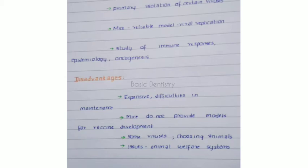The disadvantages of this technique are that it is expensive and there are difficulties in maintenance. Mice do not provide models for vaccine development; it is only used for viral replication and vaccines cannot be developed from mice. Some viruses cannot be cultivated by this technique, there is difficulty in choosing the appropriate animal for each virus, and there are issues related to animal welfare.